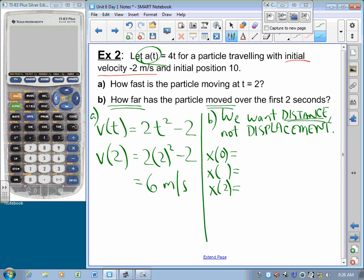How do I know where the particle turns around? Well, I set v(t) equal to 0. And I get that at time equals 1, the particle turns around.